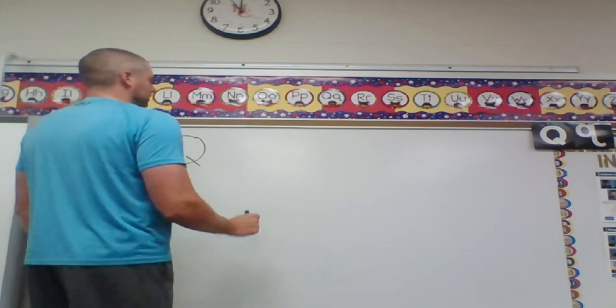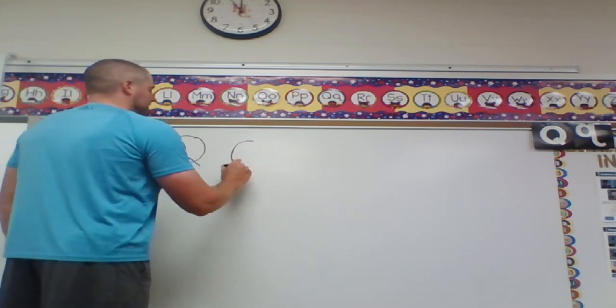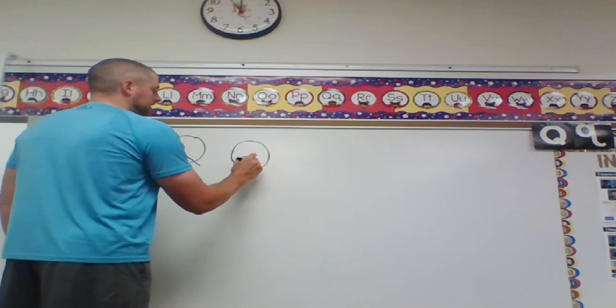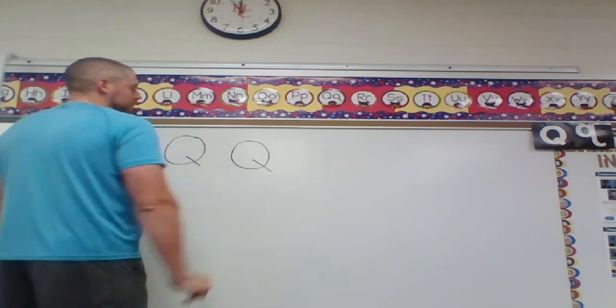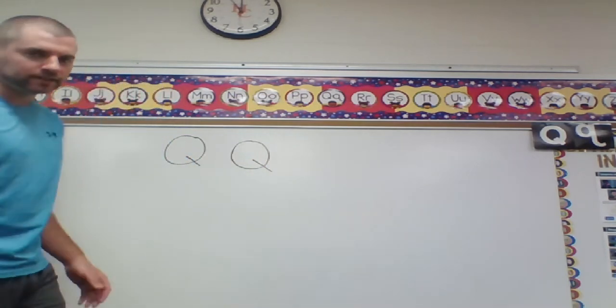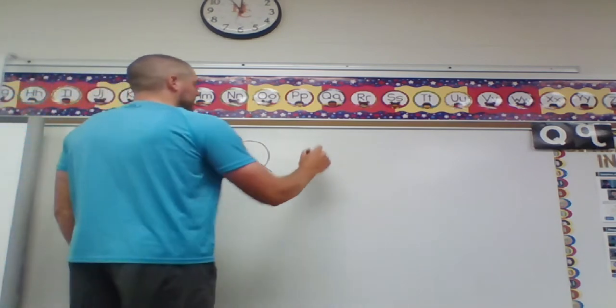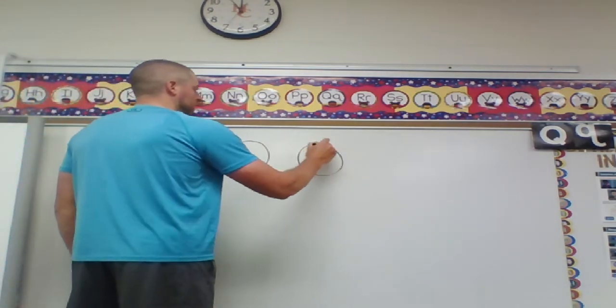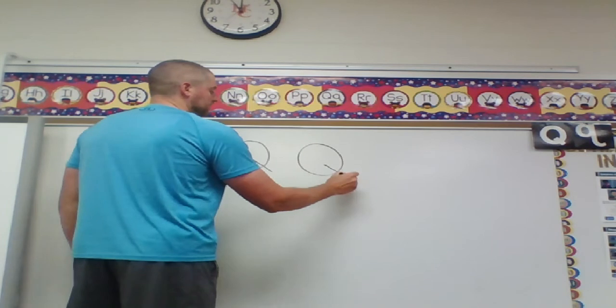Watch me make one more. Make a shape that looks like an O, go to the inside, and make a little line that comes to the outside to finish the Q. I'll make one more for you. Around, inside, to outside.